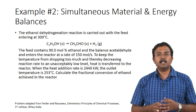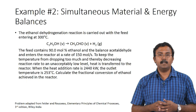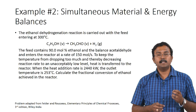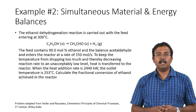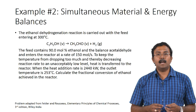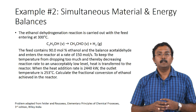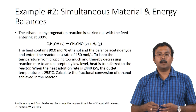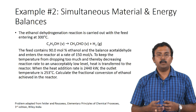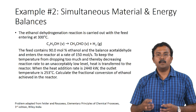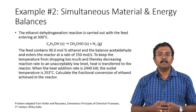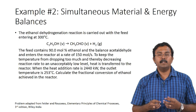The ethanol dehydrogenation reaction is carried out with the feed entering at 300 degrees Celsius. Ethanol gives acetaldehyde and hydrogen. The feed contains 90 mole percent ethanol and the balance is acetaldehyde, and this enters the reactor at a rate of 150 moles per second. To keep the temperature from dropping too much and thereby decreasing the reaction rate to an unacceptably low level, heat is transferred to the reactor. When the heat addition rate is 2440 kilowatts, the outlet temperature is 253 degrees Celsius. Calculate the fractional conversion of ethanol achieved in the reactor.